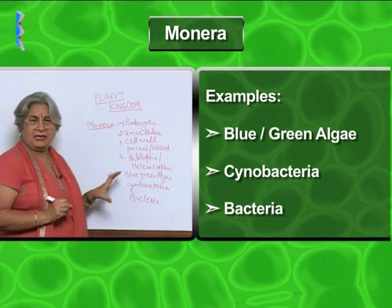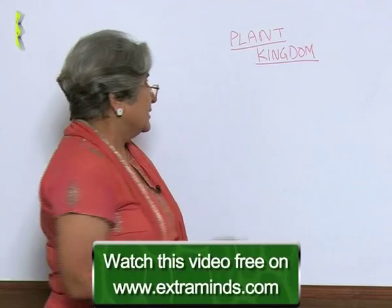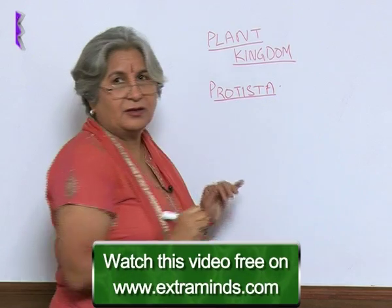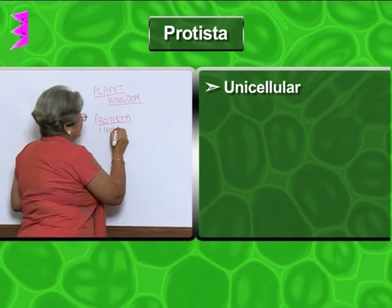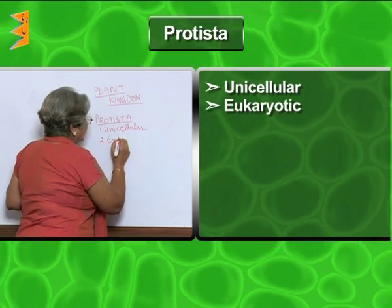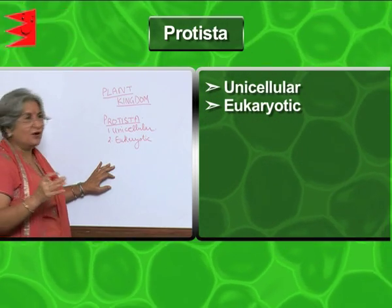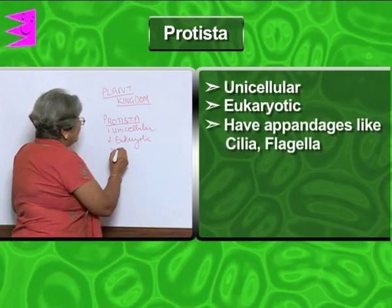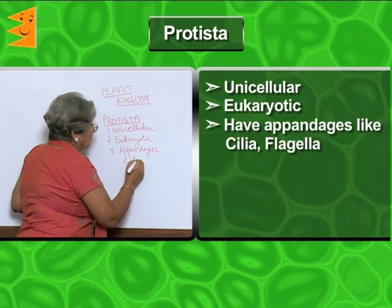As you can see, these organisms are very simple in their organization and function. The second group is Protista. Just like Monera, the Protista organisms are also unicellular — so how are they different? They are eukaryotic, so there is an improvement: the nucleus is now well developed, organelles are membrane-bound. These organisms can also move, and for that they have appendages like cilia or flagella.